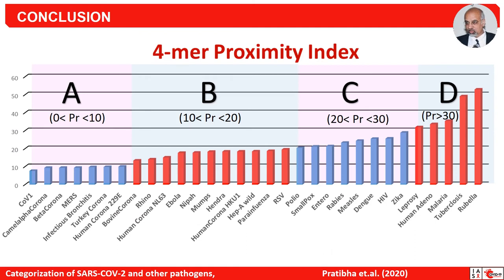This is the summary and final result of our work. Based on the value range of the proximity index, we categorize pathogens into four groups. Group A is the closest to COVID-19 with a proximity index less than 10, and Group D is the farthest with a proximity index greater than 30. Unfortunately, for Group A — the viruses closest to coronavirus — there are currently no drugs available.